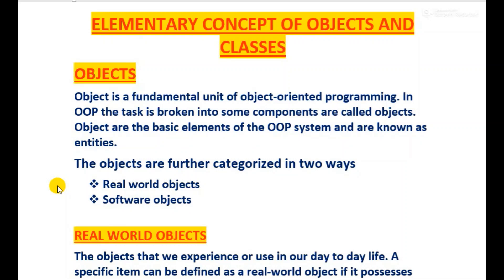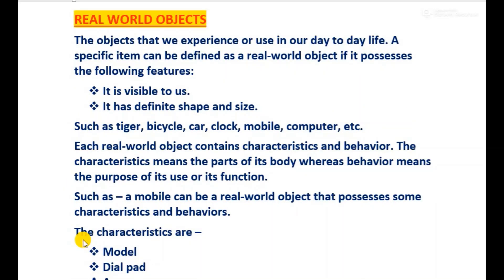I will now discuss each of these categories of objects in detail. The first one is real world objects. The objects that we experience or use in our day-to-day life are called real world objects. A specific item can be defined as a real world object if it is visible to us and has a definite shape and size. There are two categories of real world objects: living real world objects and non-living real world objects.